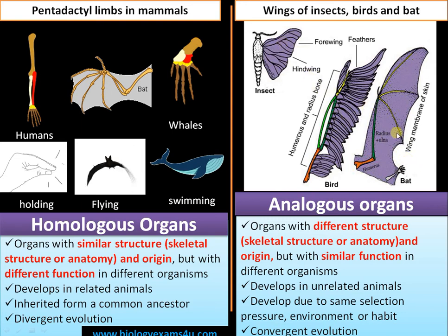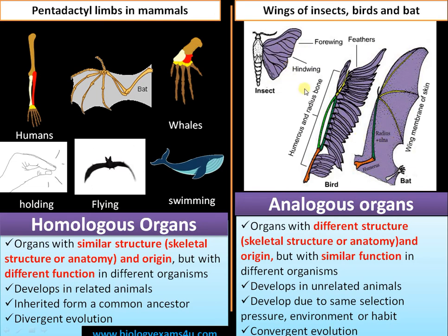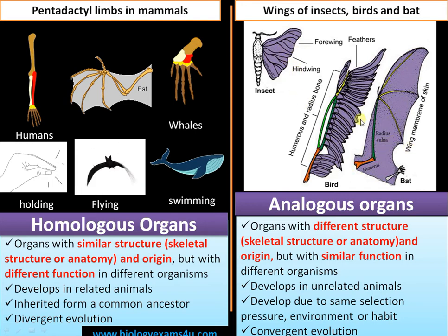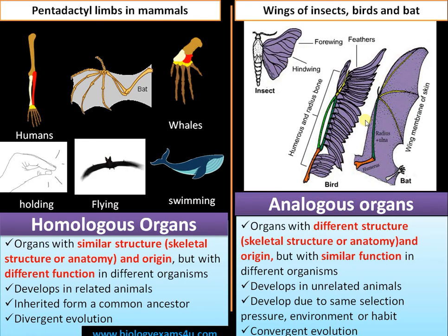Performing a similar function in different organisms is referred to as analogous organs. These are often developed in unrelated animals, possibly due to the same environmental conditions or ecological niche. The reason is convergent evolution.